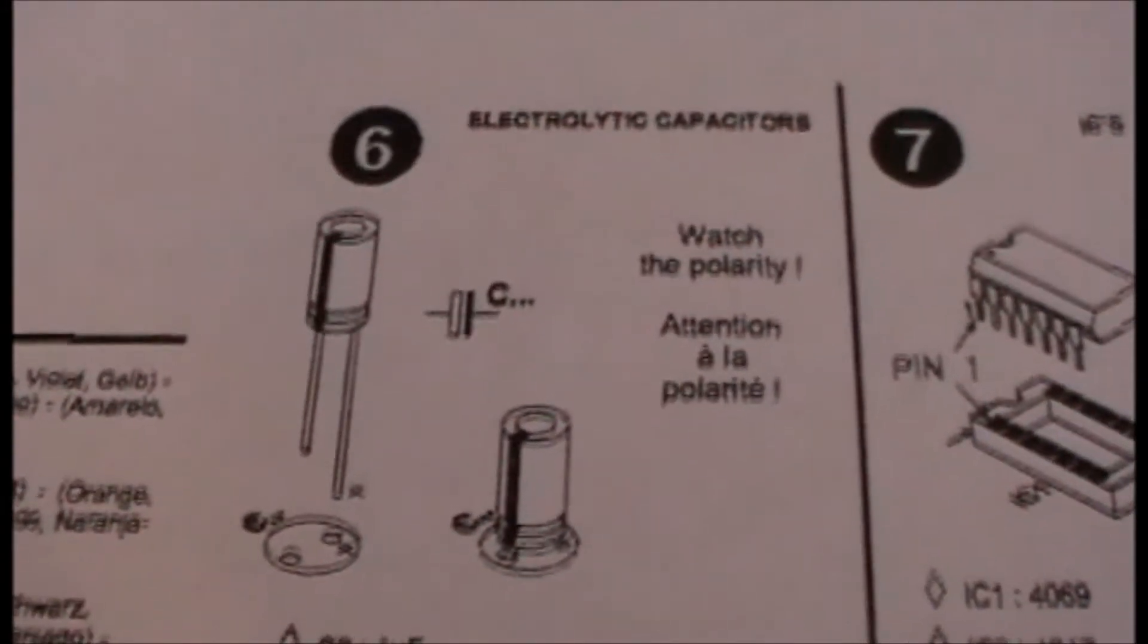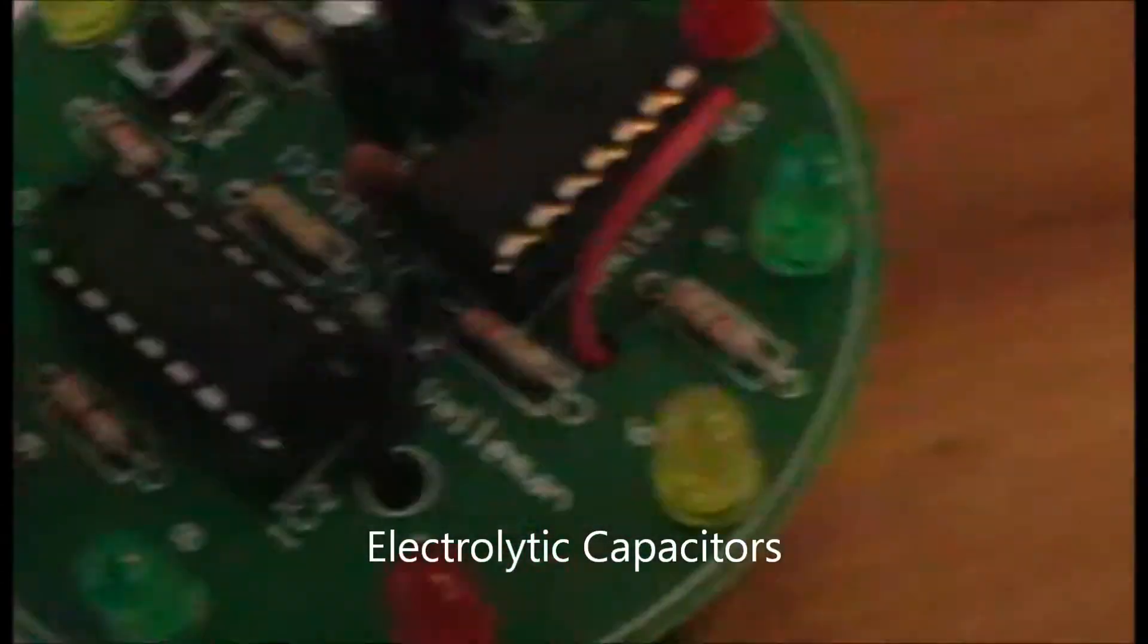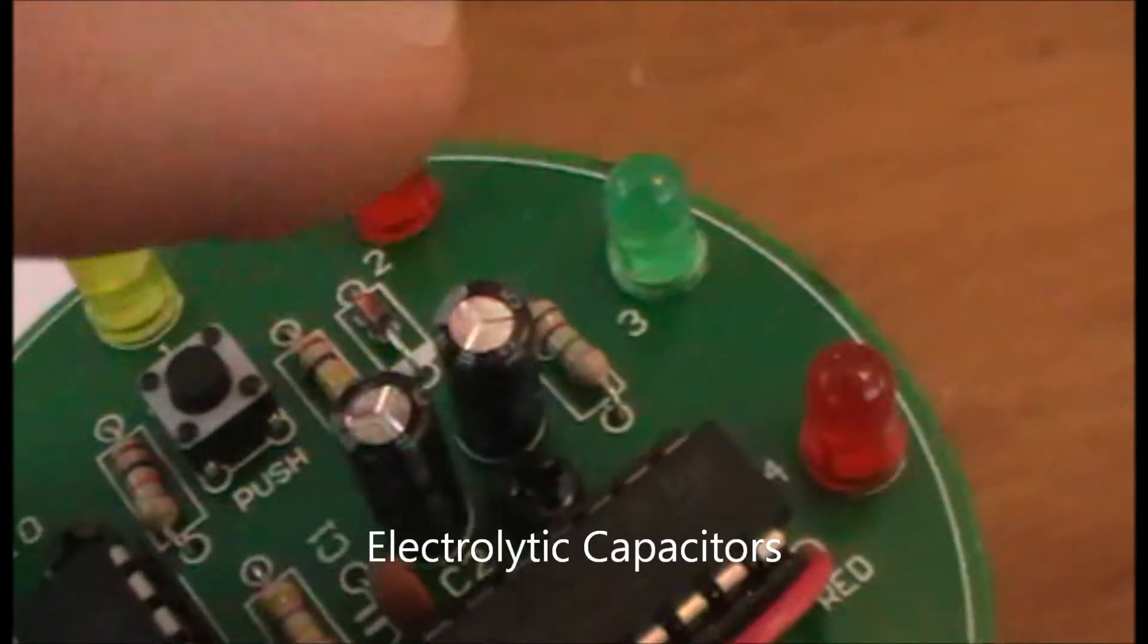Then there's the two electrolytic capacitors, and those go in C2 and C3.